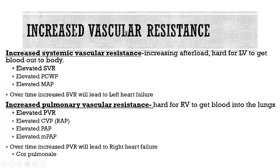Increased pulmonary vascular resistance (PVR) makes it hard for the right ventricle to get blood into the lungs. You'll see an elevated PVR, an elevated CVP or right atrial pressure from backup into the right atrium, and elevated pulmonary arterial pressure (PAP) and mean pulmonary arterial pressure (MPAP). Over time, increased PVR leads to right-sided heart failure, specifically called cor pulmonale.